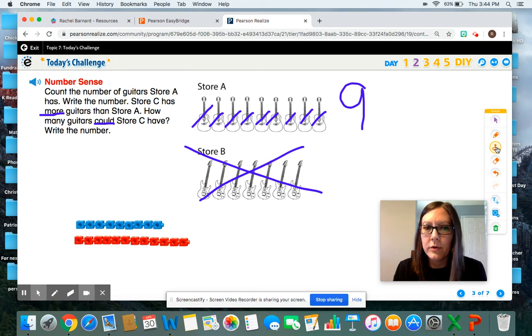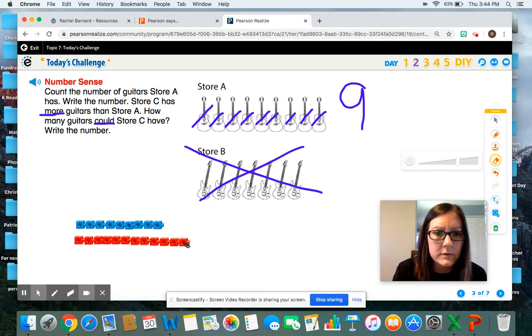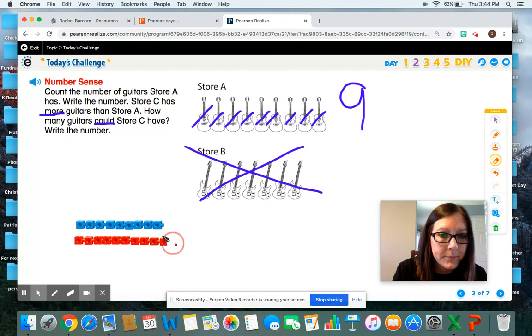I'm going to try to trick you. Could store C have nine guitars? Let me get rid of some of these counting cubes. Oh, okay. It erases. There we go. Like that. All right.